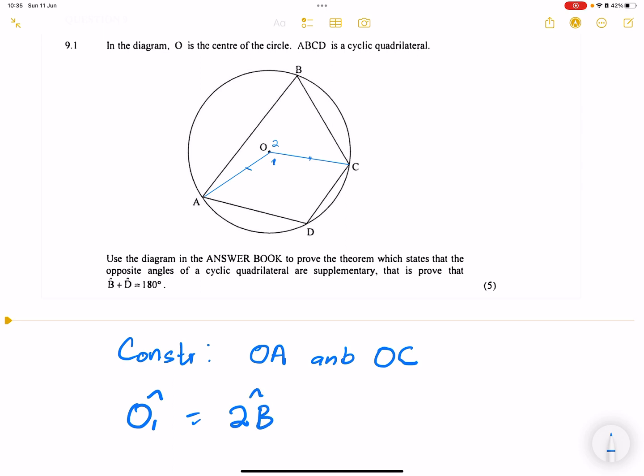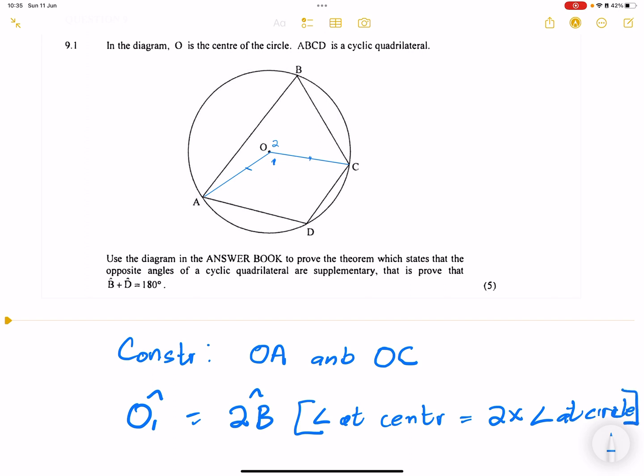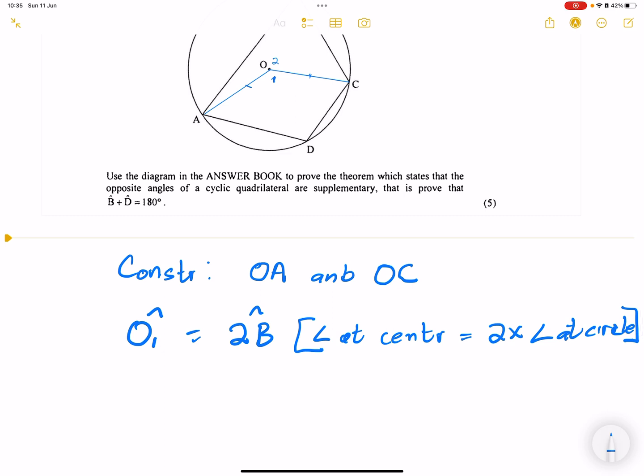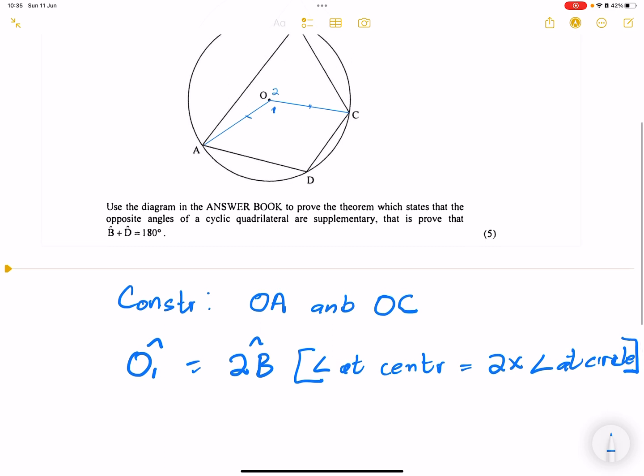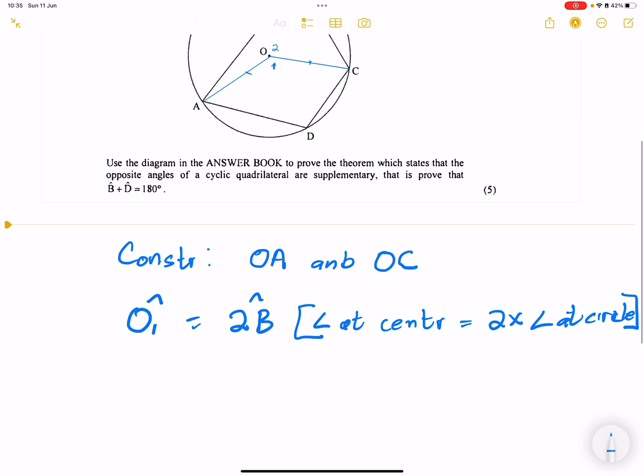But why is that? Because we know angle at center equal to two times angle at circumference. So in this case, we know that angle at center equal twice angle at circumference. So O1 is equal to two times B.